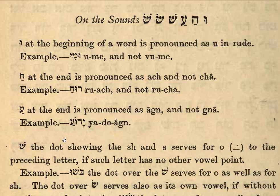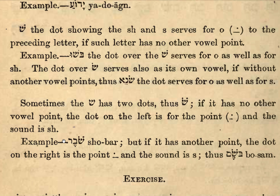For a beginner, the next point is the source of many nightmares. The letter Shin — the dot showing SH and S also serves for the letter O with the invisible vav, so this dot has got the invisible letter vav underneath it, and it serves as the O to the letter before it.